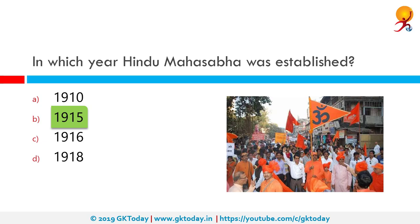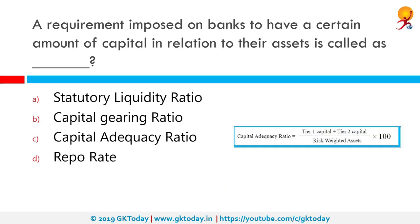The sabha became more aggressive after 1929 and started propagating Hindu Rashtra. A requirement imposed on banks to have a certain amount of capital in relation to their assets is called the Capital Adequacy Ratio. Capital Adequacy Ratio is also known as the Capital to Risk Assets Ratio. It is the ratio of a bank's capital to its risks. National regulators track a bank's CAR to ensure that it can absorb a reasonable amount of loss and complies with statutory capital requirements.